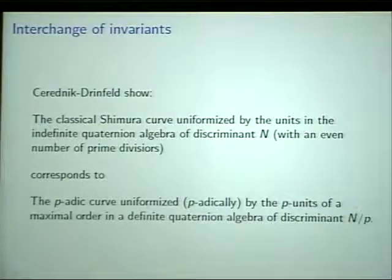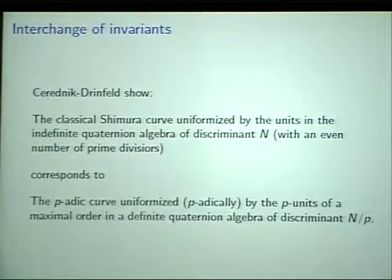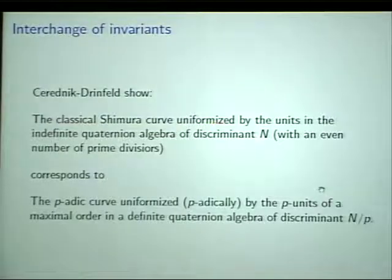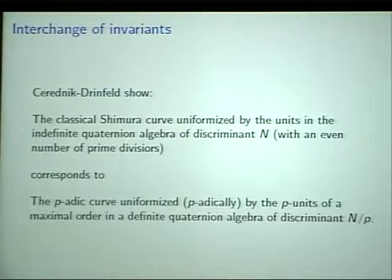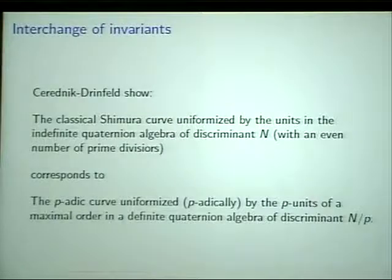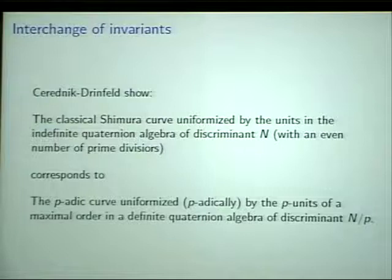There's a theorem due to Cerednik and Drinfeld: if you start with a classical Shimura curve uniformized by the units in an indefinite quaternion algebra of discriminant N — indefinite means when you tensor with R you get 2x2 matrices over R, but the discriminant primes where the algebra is locally a division algebra must be an even number — pick one of those primes and delete it from N. Now you have an odd number of primes and there's a definite quaternion algebra. The new quaternion algebra embeds into the 2x2 matrices over Q_p for the p you threw away. You take a maximal order in the definite quaternion algebra and take elements whose norm is a power of p.